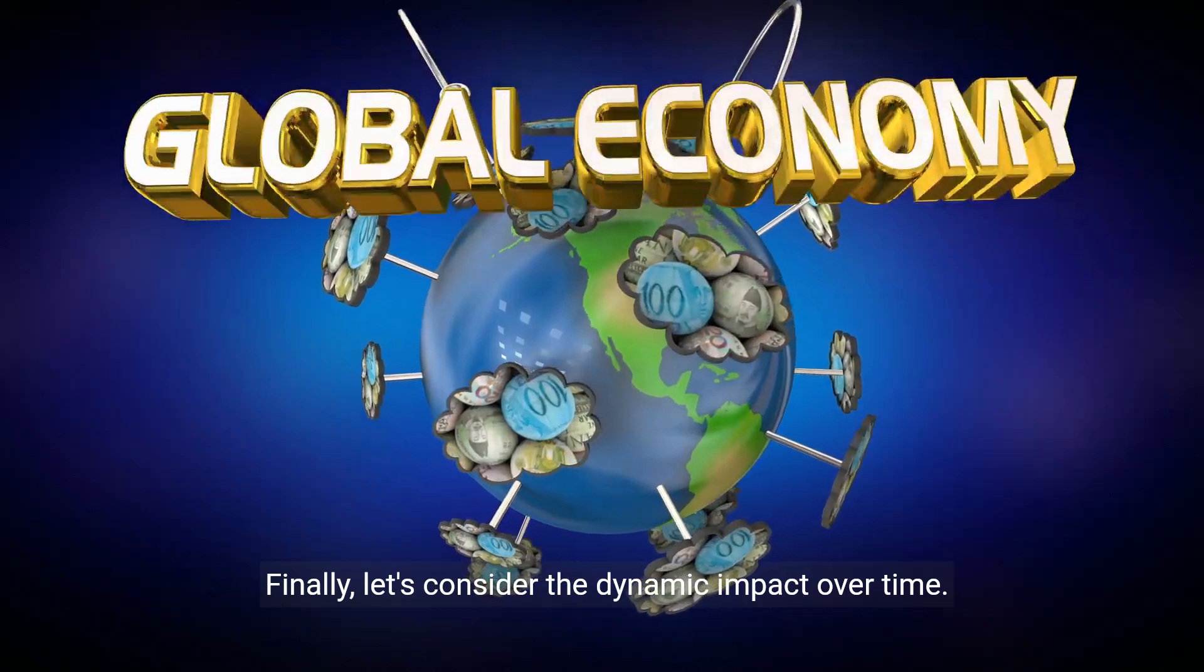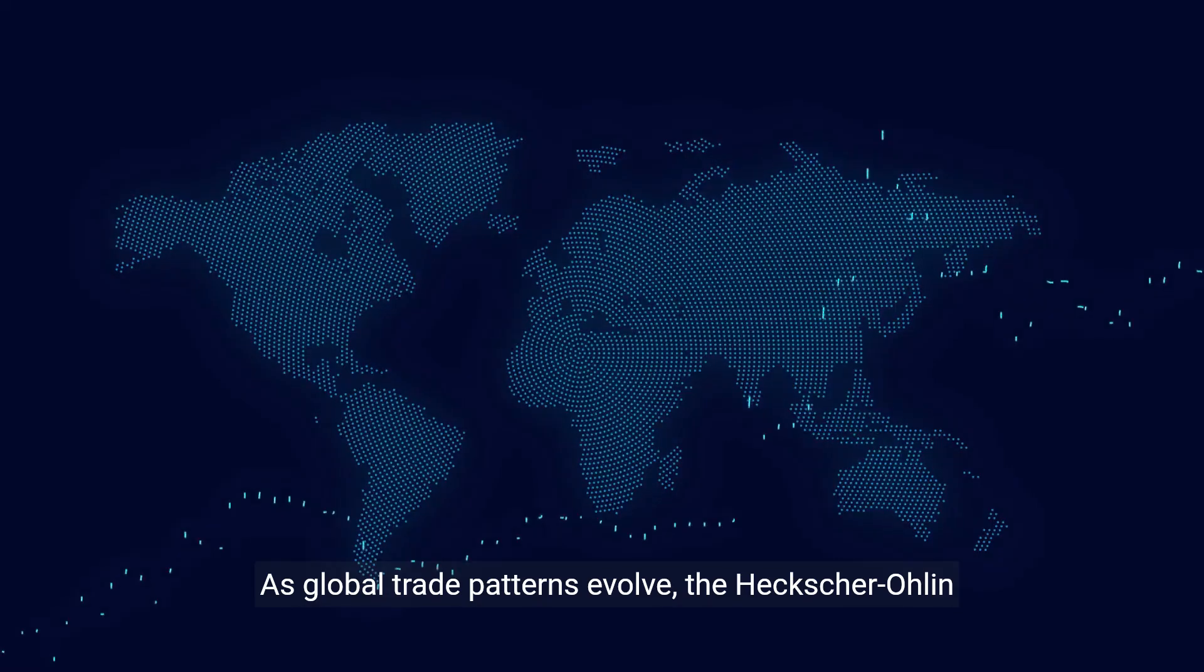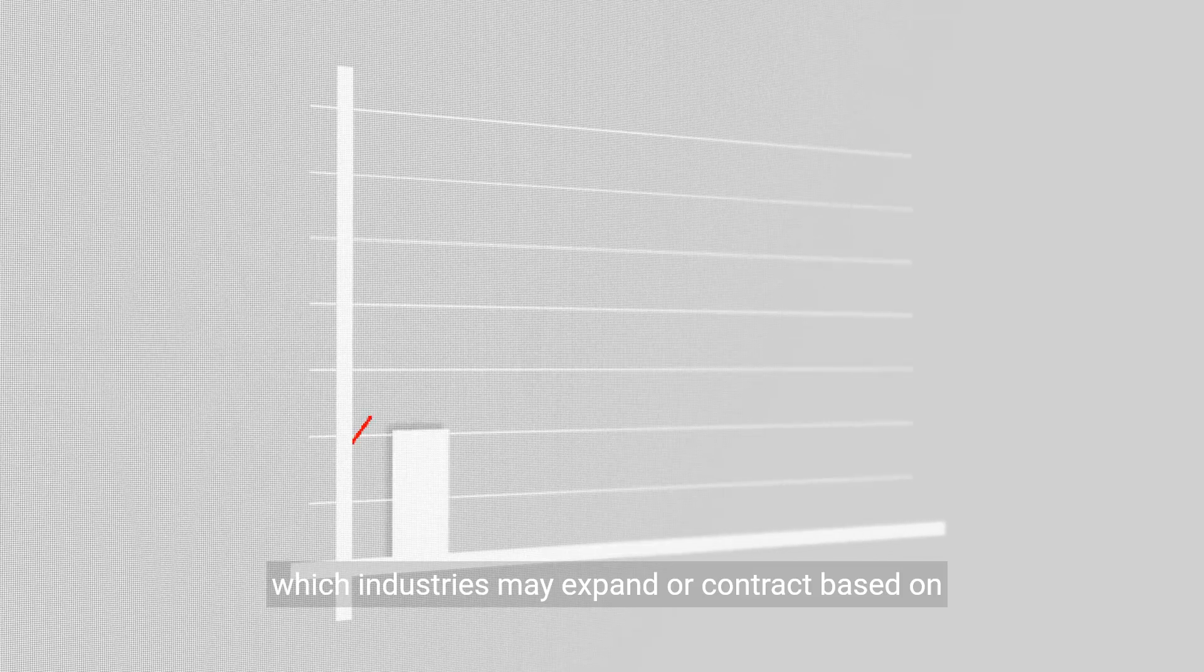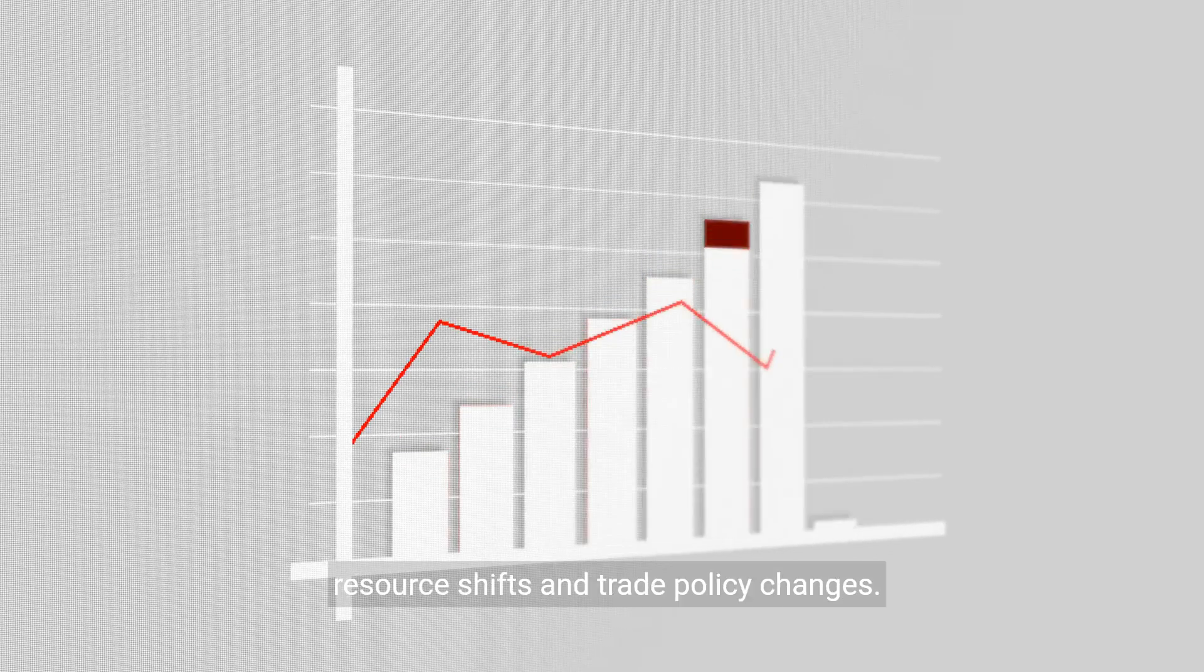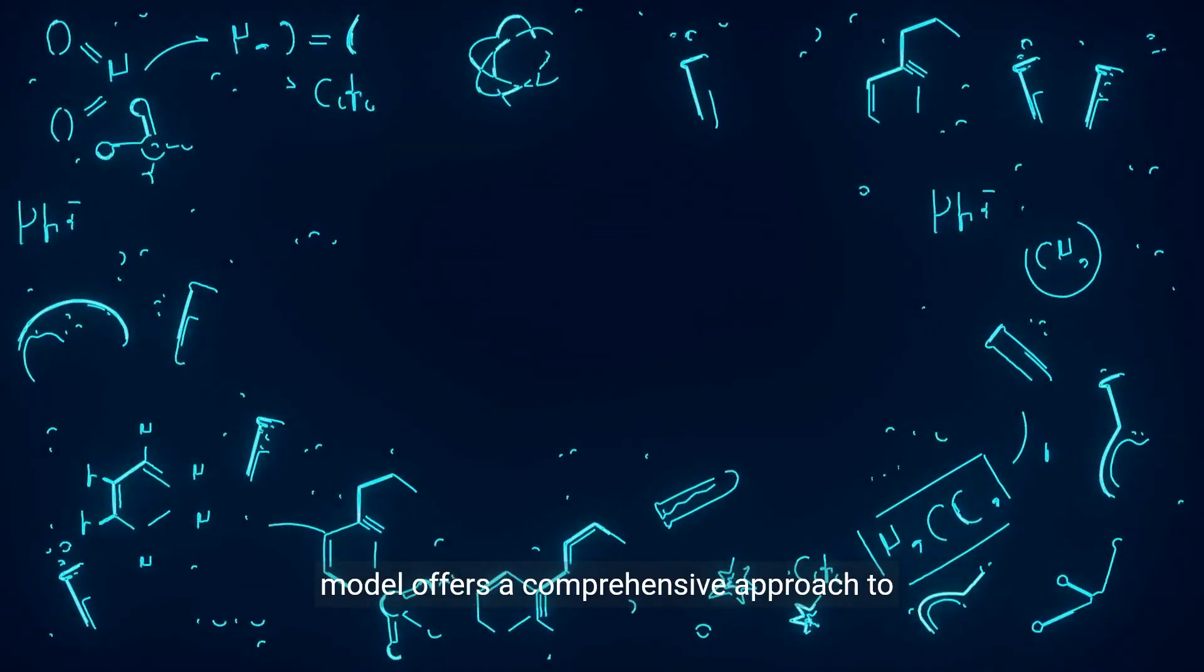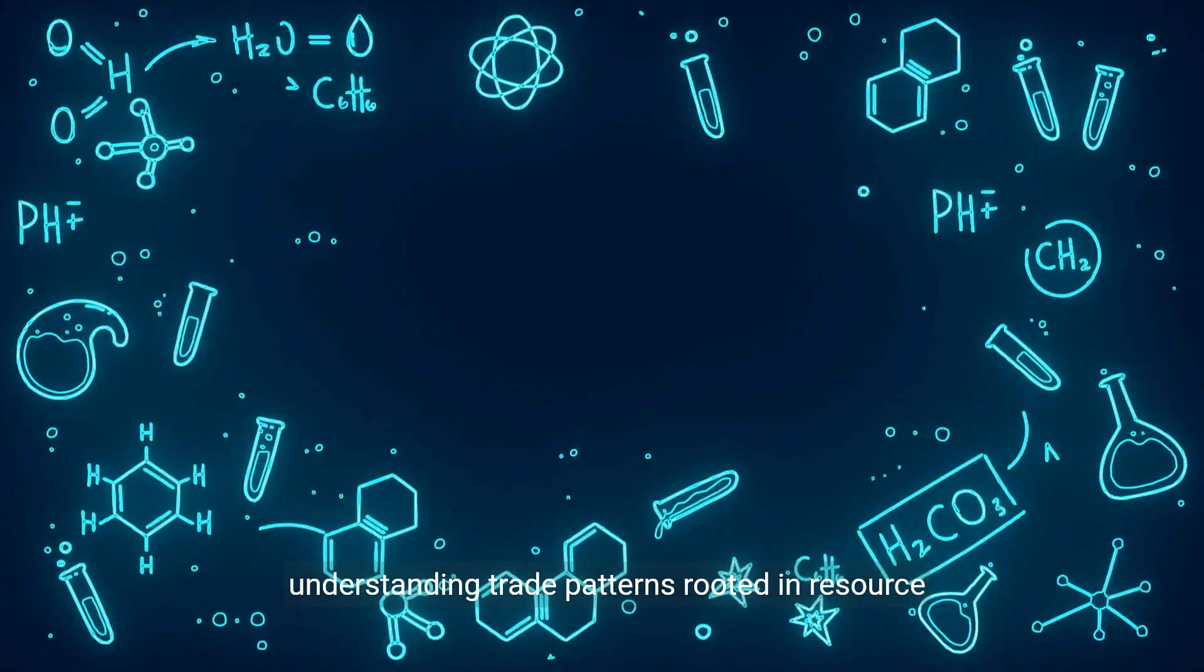Finally, let's consider the dynamic impact over time. As global trade patterns evolve, the Heckscher-Ohlin model provides a framework to anticipate which industries may expand or contract based on resource shifts and trade policy changes. By breaking down these steps, we can see how the model offers a comprehensive approach to understanding trade patterns rooted in resource availability.